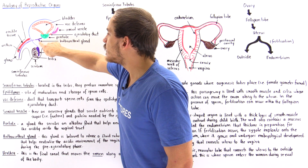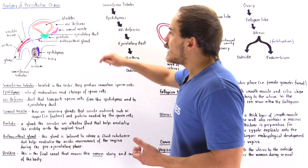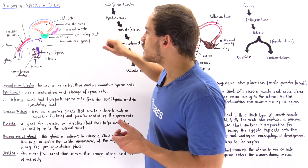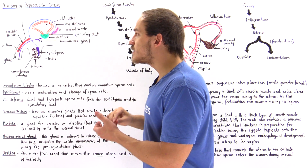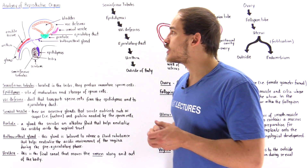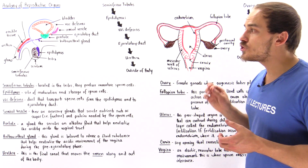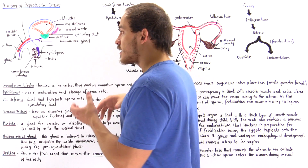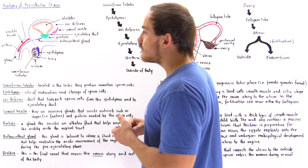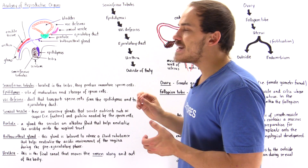Along the urethra we have the bulbourethral gland and the prostate gland. Both glands release a slightly basic substance. The difference is that the bulbourethral gland releases that substance before ejaculation, while the prostate gland releases it during ejaculation. The function of that slightly basic substance is to neutralize the environment inside the vaginal tract, because sperm cells require a slightly basic or neutral solution to survive — they cannot survive in an acidic environment.